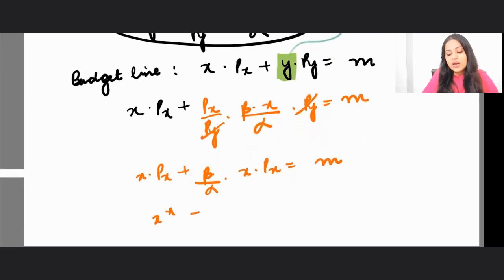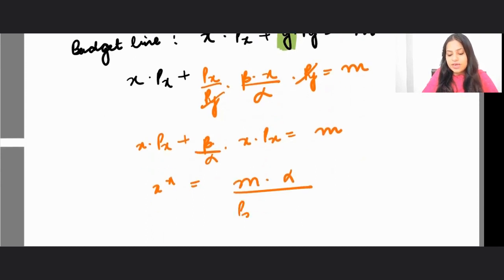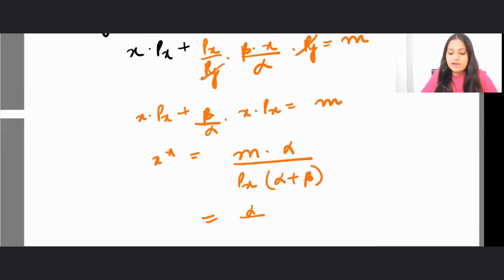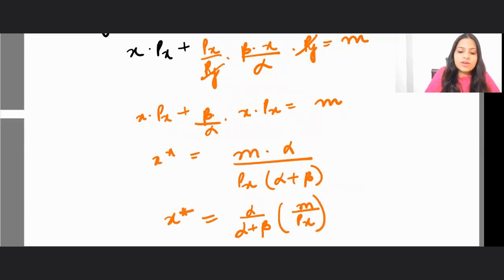So you can also rewrite this thing like this: alpha upon alpha plus beta, m by px. This becomes your value of the x star. This is fine, this is your final demand of x star.